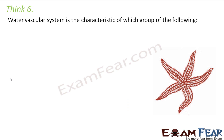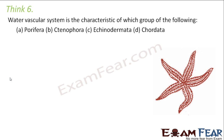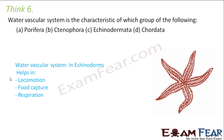The water vascular system is a characteristic feature of which group: Porifera, Ctenophora, Echinodermata, or Chordata? We saw the water vascular system in Echinodermata, and it helps in locomotion, food capture, and respiration. The water vascular system has a central ring canal with radial canals going outward and tube feet attached, all present in echinodermata.